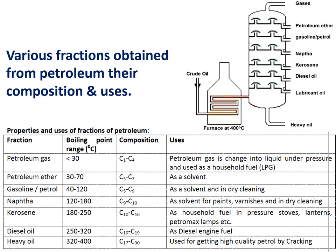The fractions and their uses: First, petroleum gases — boiling point below 30 degrees centigrade, composition C1 to C4, used for domestic household purposes as LPG. Next, petroleum ether — boiling point 30 to 70 degrees, composition C5 to C7, used as a solvent in the chemical industry. Next, gasoline or petrol — the most useful fuel — boiling point 40 to 120 degrees centigrade, composition C5 to C9, used as fuel in internal combustion engines.